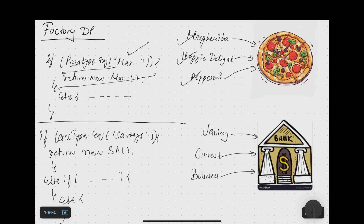Before deep diving into the factory design pattern, let me explain some scenarios where it will be very useful. First, let's discuss a scenario where you are building a pizza delivery application where you have different types of pizzas — Margherita, Vegetalite, Pepperoni, and so on. Without the factory design pattern, every time someone orders a pizza you have to write a ton of if-else statements.